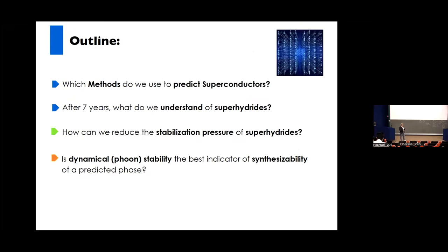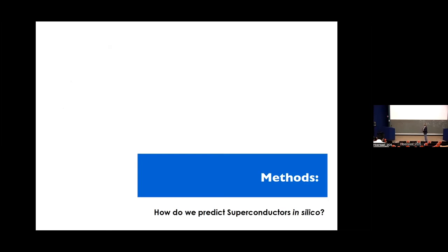Here is a short outline of my talk. Before introducing our work, I want to explain a little bit the basics of how you can predict superconductors. Then I'll tell the story of superhydrides and why we are looking at them. Then I'll show our work on ternary superhydrides, where we try to address how to reduce the stabilization pressure — having materials with a high Tc like superconducting hydrides but working closer to ambient pressure. Finally, I'll discuss whether our methods to estimate synthesizability are good enough.